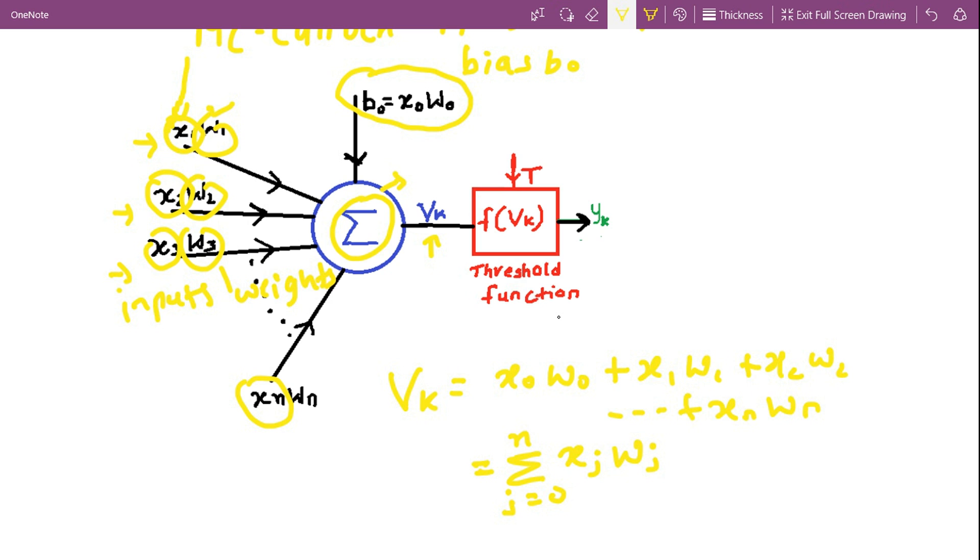So this output vk is then passed to threshold function, which then decides the final output yk.